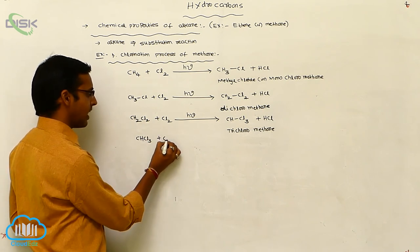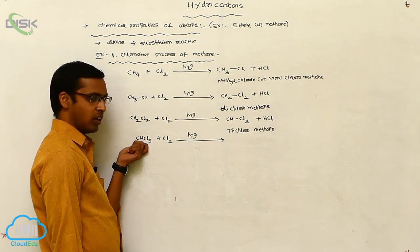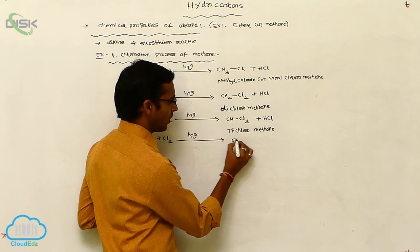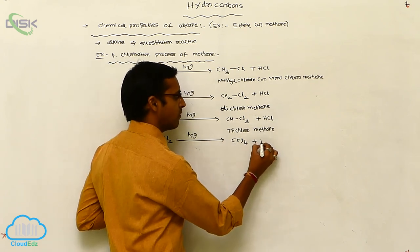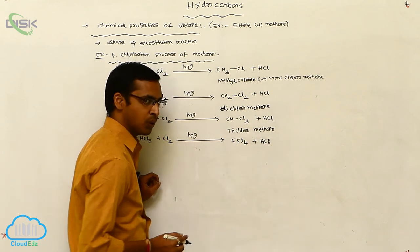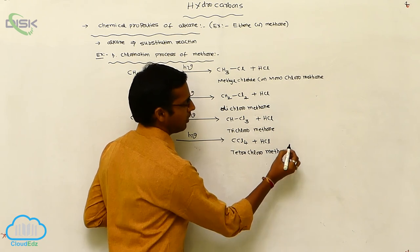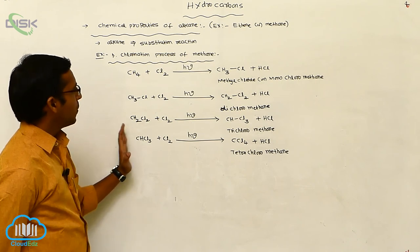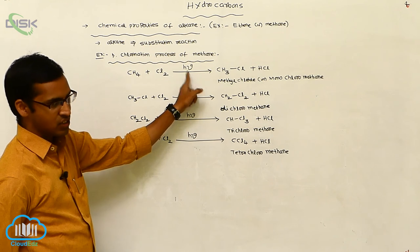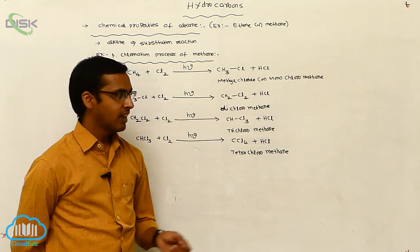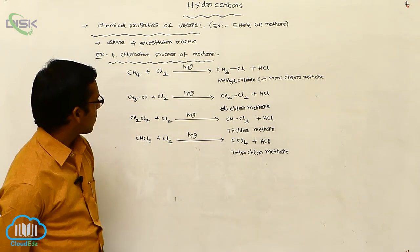Trichloromethane (CHCl3) reacts with chlorine in the presence of photochemical conditions. The last remaining hydrogen is replaced with chlorine. There were 3 chlorines; abstracting one more gives 4 chlorines, producing CCl4 plus HCl. The prefix for 4 is tetra, so this product is tetrachloromethane. This completes the chlorination process of methane.